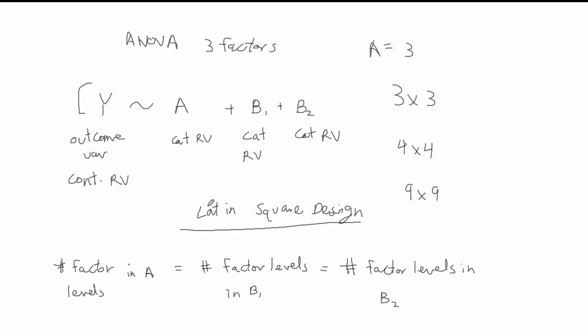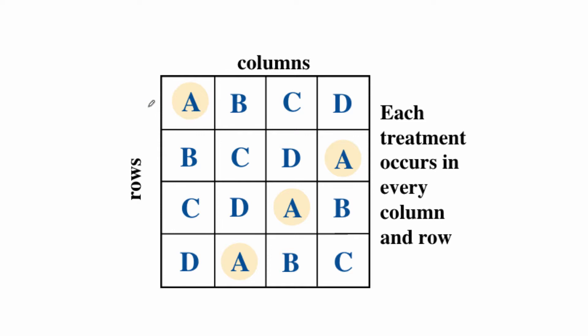This type of experimental design is known as the Latin square design because you can visualize every combination of treatment group, factor level for b1, and factor level for b2 using what's called in mathematics a Latin square. For example, if you have a factor variable x with four treatment groups a, b, c, d, you have a 4x4 Latin square design and you can visualize every combination of b1, b2, and x using a Latin square.